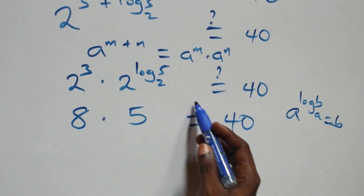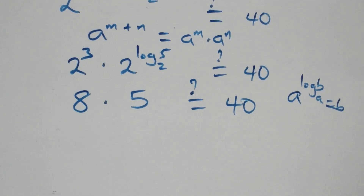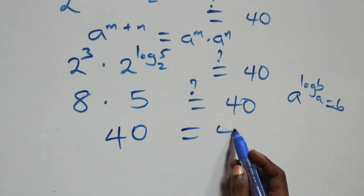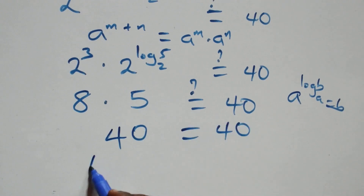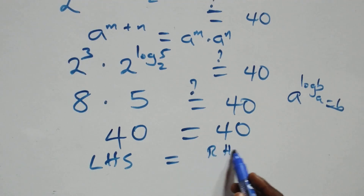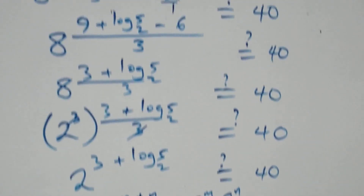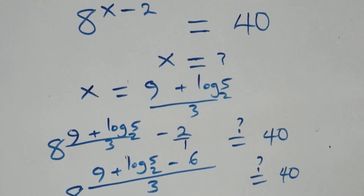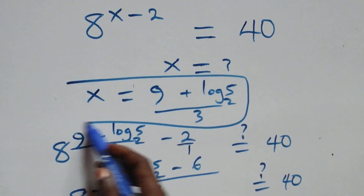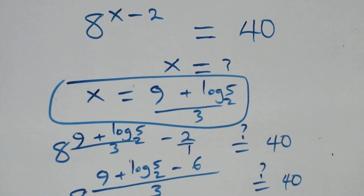8 times 5 equals 40, which equals 40 on the right-hand side. Hence the left-hand side equals the right-hand side. Therefore we conclude that x equals 9 plus log₂5 all over 3 satisfies this given problem.